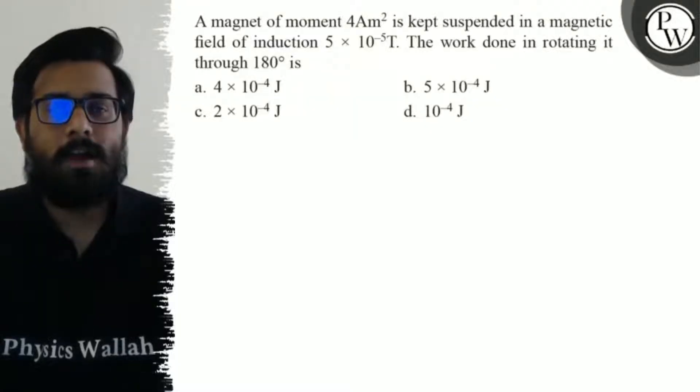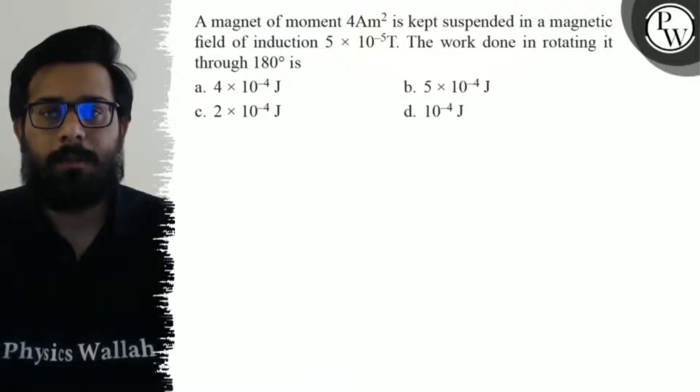Hello students, let's see the question. A magnet of moment 4 ampere meter square is kept suspended in a magnetic field of induction 5 × 10⁻⁵ tesla. The work done in rotating it through 180 degrees is: